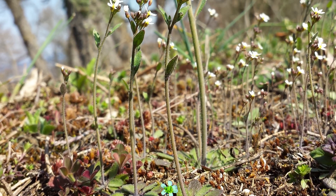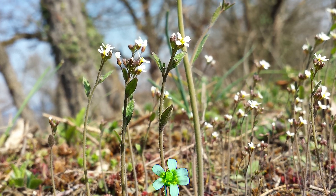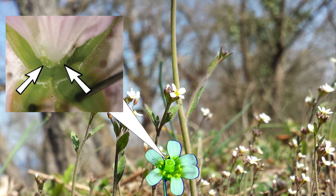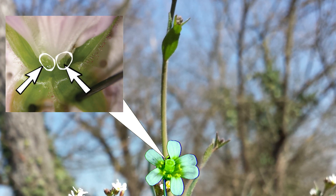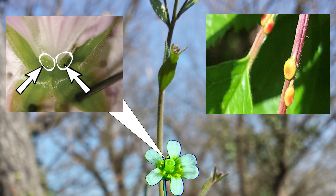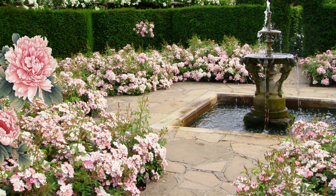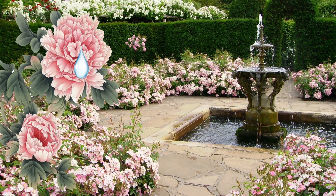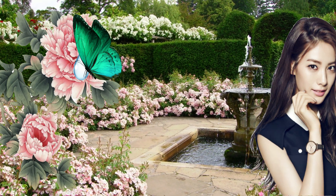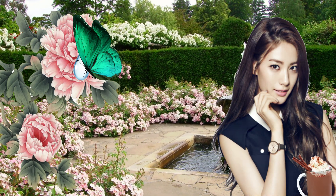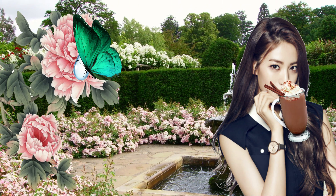Nectar is a sugar-rich liquid produced by plants in glands called nectaries, visible as tiny droplets either inside a flower or on other parts of a plant, depending on the species. This sweet viscous secretion is for animals that feed on it what hot chocolate is for us, which makes nectar the primary reason for them visiting the flowers.